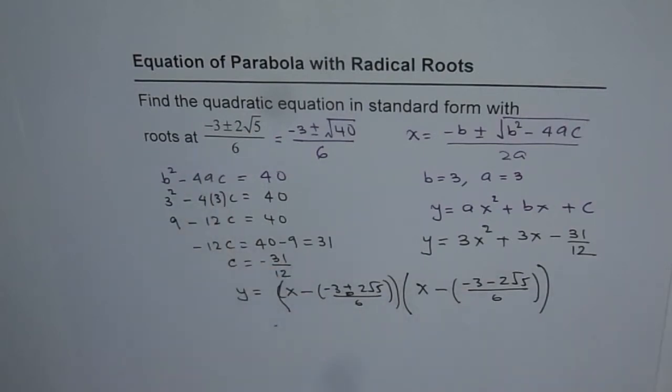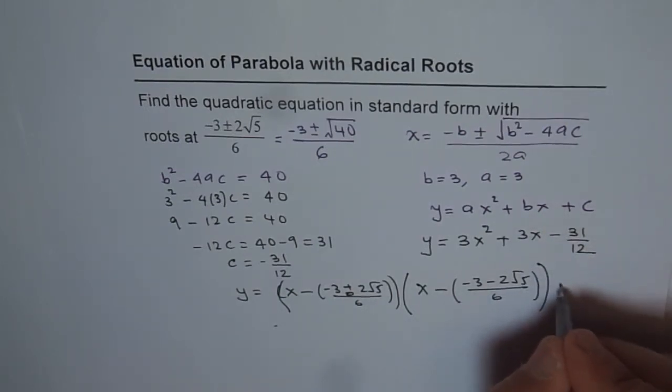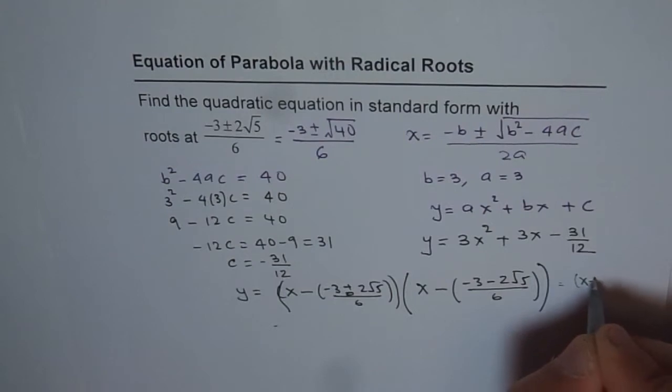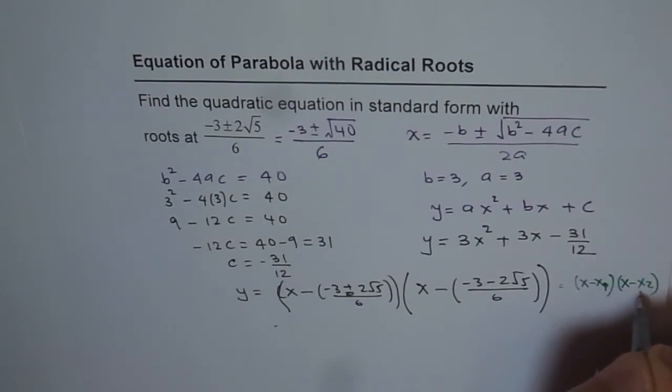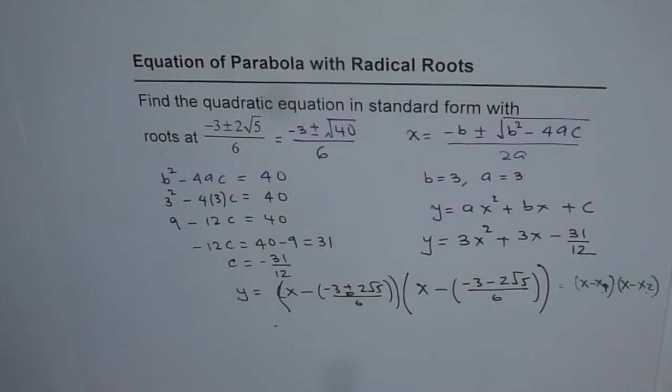If the roots are normal integers, not radicals, then the standard method is better: y = (x - x₁)(x - x₂). This is much simpler if x₁ and x₂ are integers. But if they are radicals like we have here, it may become complicated.